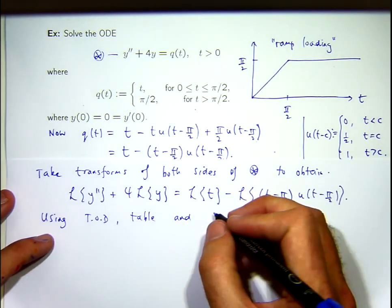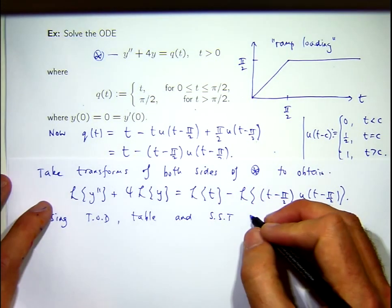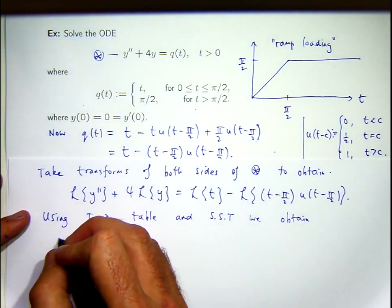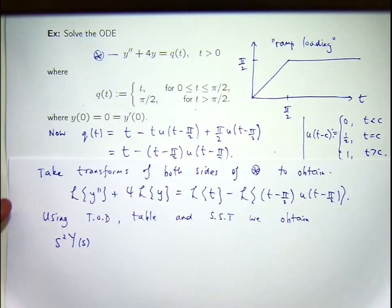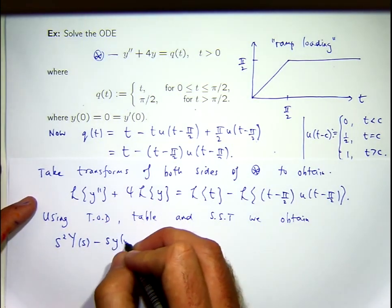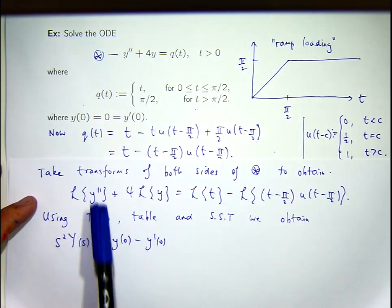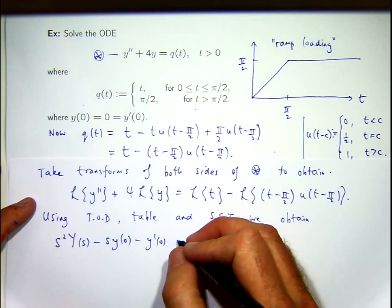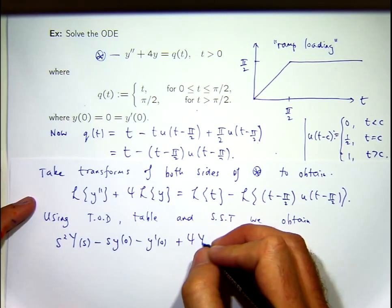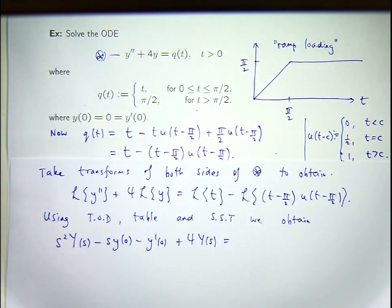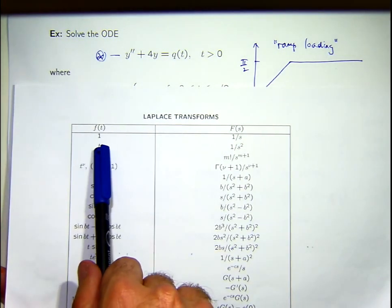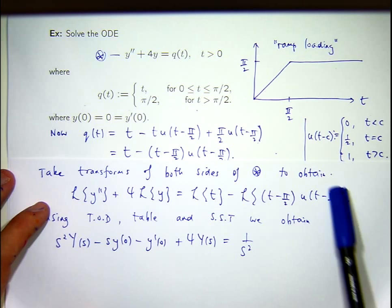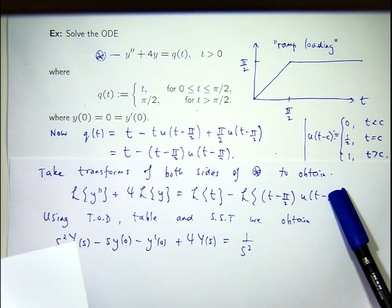TOD means transform of derivatives, and over here I'm going to use the second shifting theorem. So the Laplace transform of Y double prime gives the standard formula. The Laplace transform of T — you can probably remember that, but if you forget it, look at the table. The Laplace transform of T is 1 on S squared.